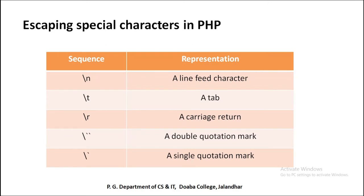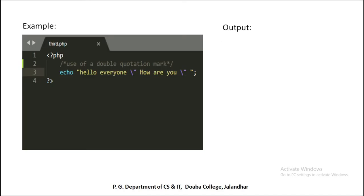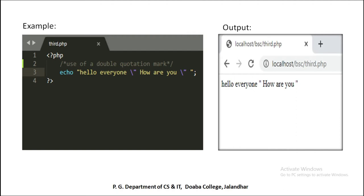The next topic is escaping special characters in PHP. There are 5 escape sequences used in PHP: backslash n for a new line feed character, backslash t for a tab, backslash r for a carriage return, backslash double-quote for a double quotation mark, and backslash single-quote for a single quotation mark. For example, using a backslash double-quote inside a string will print double quotes in the output — like 'hello everyone and how are you' printed with double quotes around it.